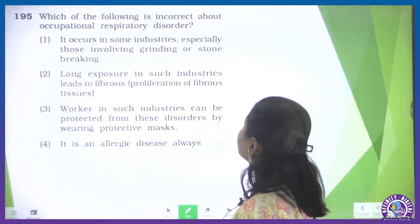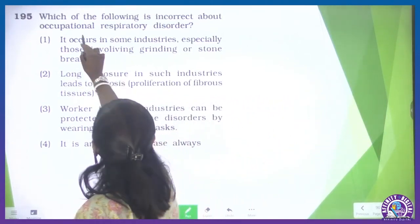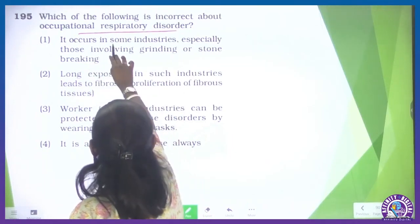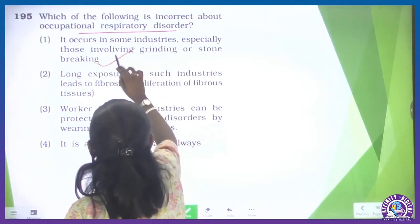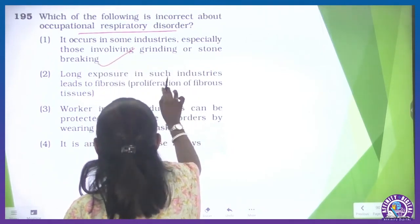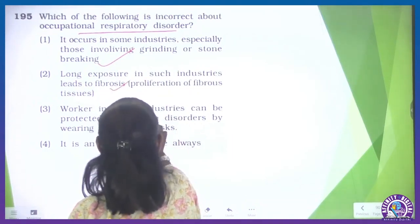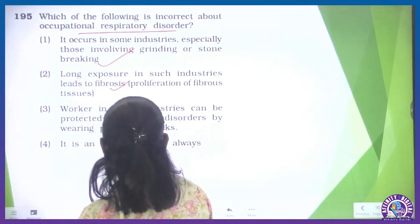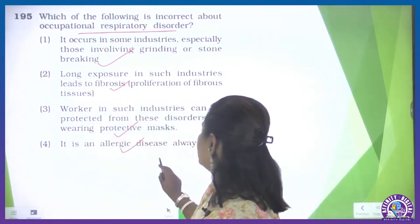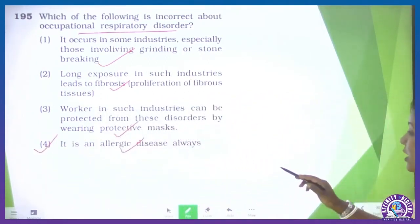Question 195: which of the following is incorrect about occupational respiratory disorder? It occurs in some industries, especially those involving grinding or stone breaking — yes. Long exposure leads to fibrosis — correct, this is from NCERT. Workers can be protected by wearing protective masks — also correct. 'It is an allergic disorder' — no, it is not an allergic disease. So this is our incorrect option. Question 195, option 4 is correct.